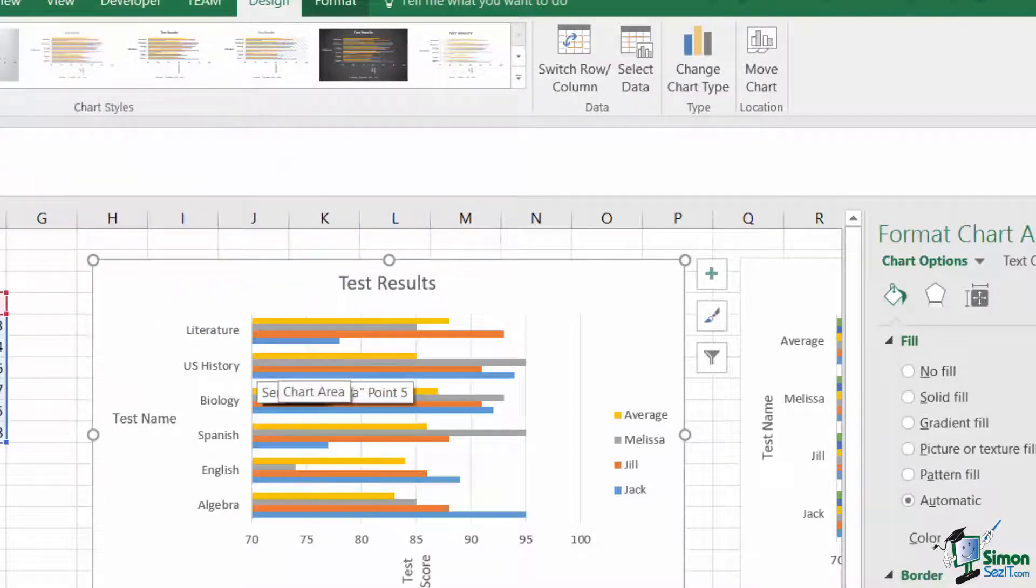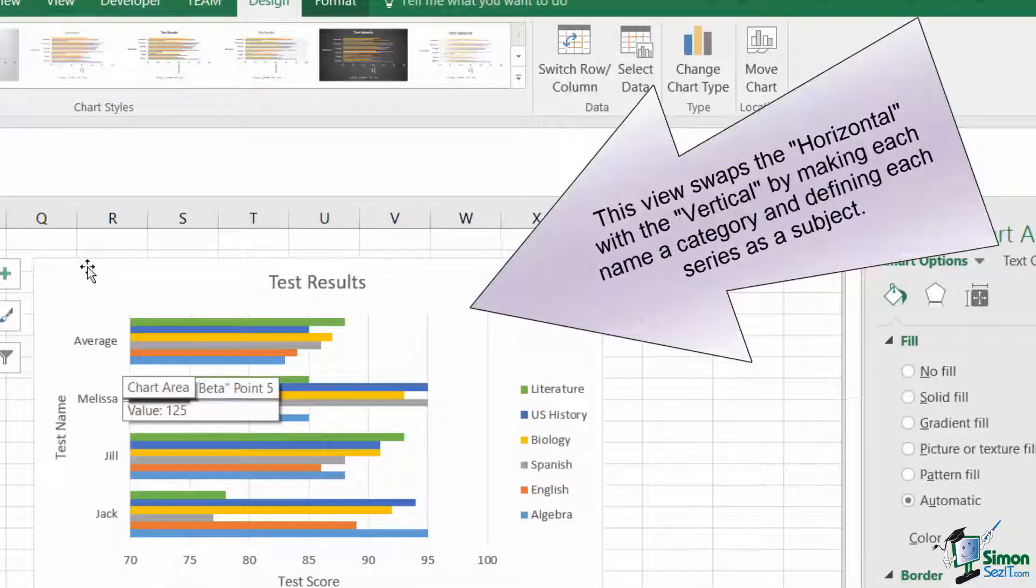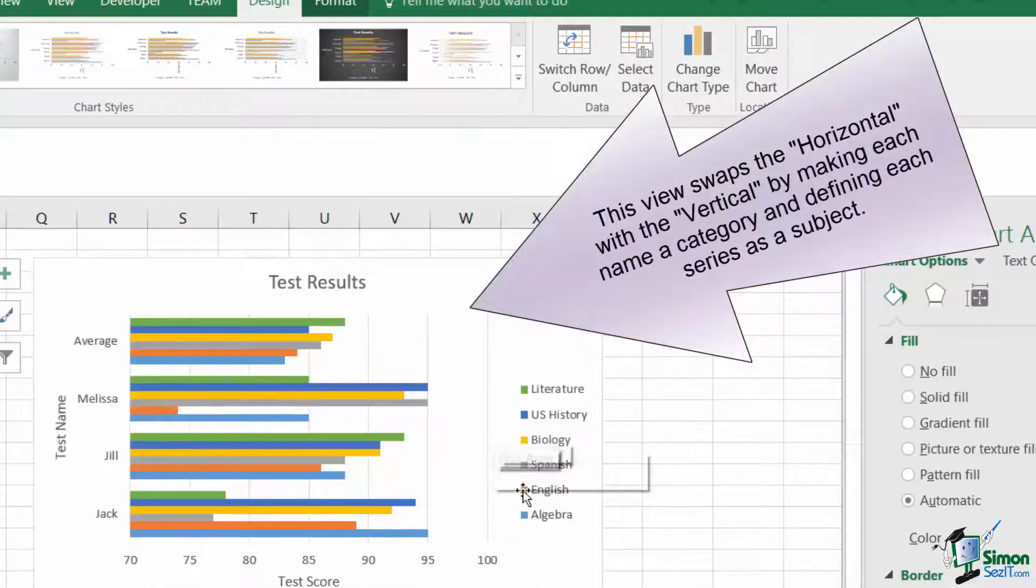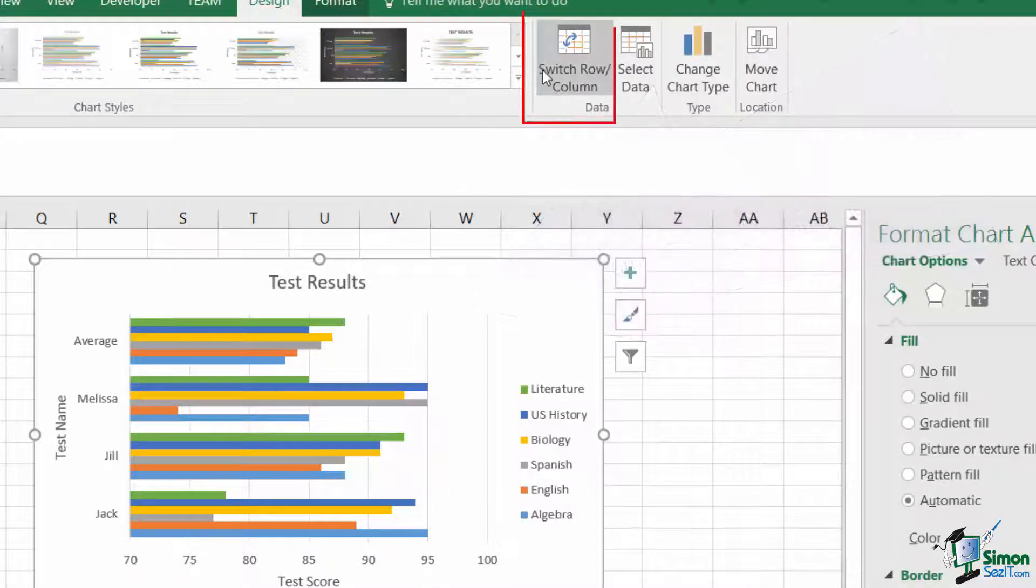As you can see, you can quickly identify above average and below average performers, and you can have alternative views. For example, I could look at the groupings by person and see how their scores differ across different categories. This can all be done very quickly and easily using the switch row and column command on the design tab.